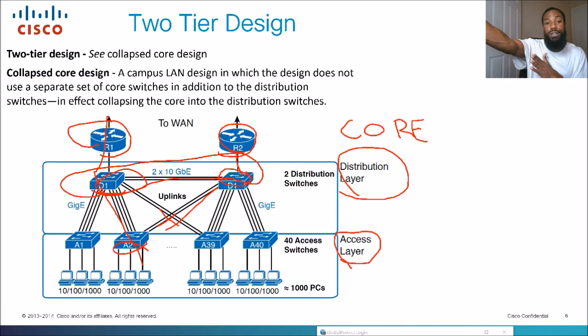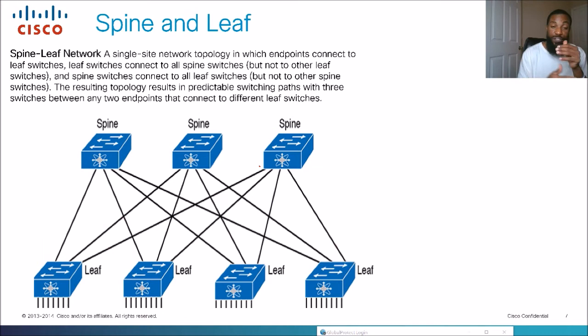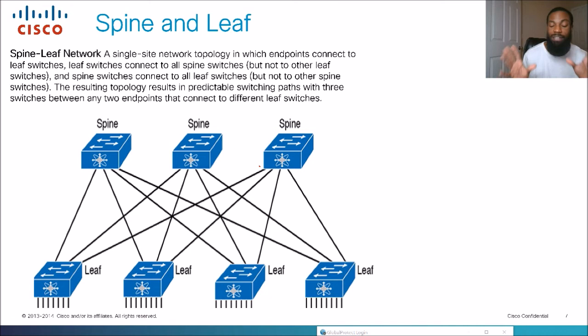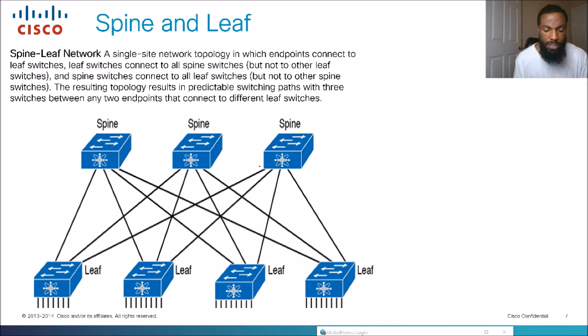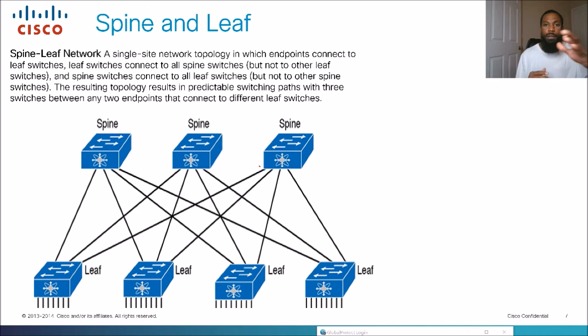Spine and leaf is a single-site network topology in which endpoints connect to leaf switches, and leaf switches connect to all spine switches. The spine switches are similar to the distribution layer, and the leaf switches are like the access layer. The leaves are at the bottom, connected to the spine — the backbone of the network — which is why it's called spine versus leaf. This is also called the Clos design, named after Charles Clos. You typically see this in data centers because it creates redundancy and higher throughput.